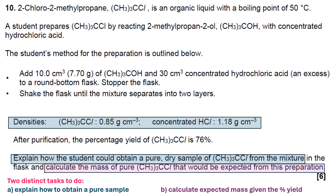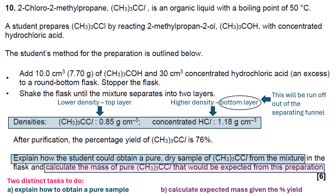So let's go through the first task, which is to explain how to obtain a pure sample. They give you two densities. The higher density is concentrated HCl, so that means it will be run off out of the separating funnel because it will be the bottom layer. We keep the top layer and then purify it.